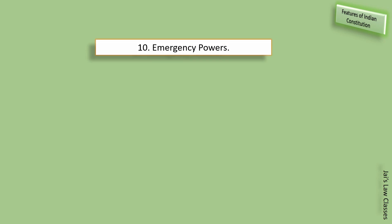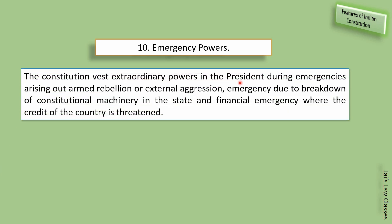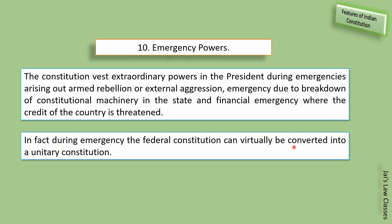Emergency powers are also a feature. The constitution vests extraordinary powers in the president during emergencies arising out of armed revolution, external aggression, breakdown of constitutional machinery in a state, or financial emergency where the credit of the country is threatened. During emergency, the federal constitution can virtually be converted into a unitary constitution. Simple baat hai — desh mein andarooni ya bahari khatra hone par emergency provisions president ke kaam aati hain, aur desh ek unitary form of government ban jaata hai.